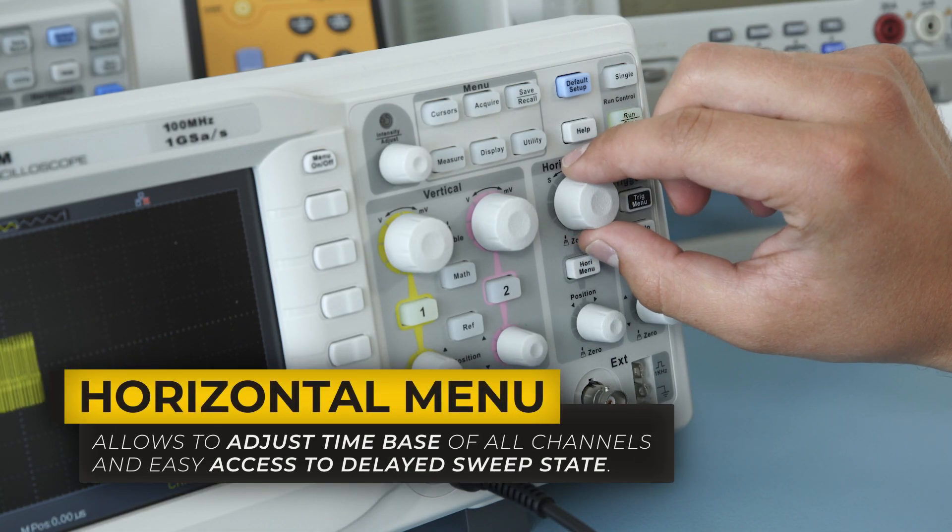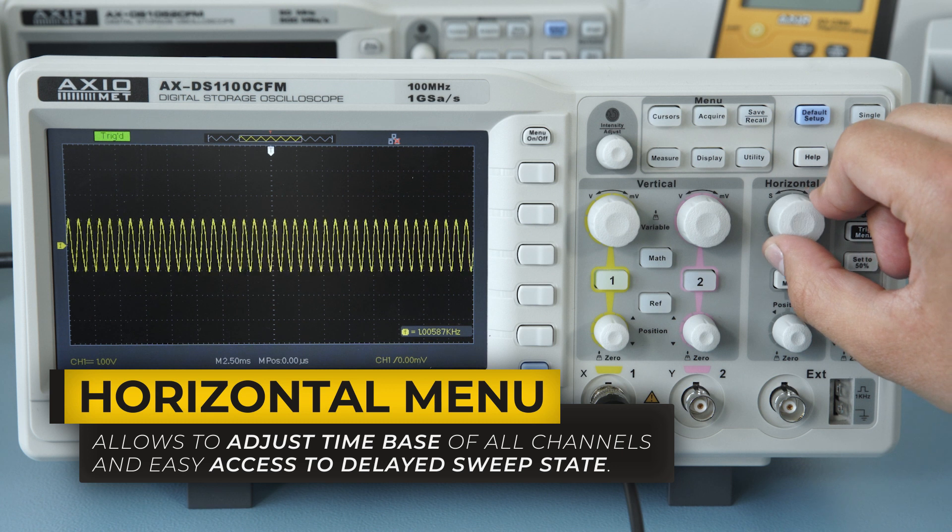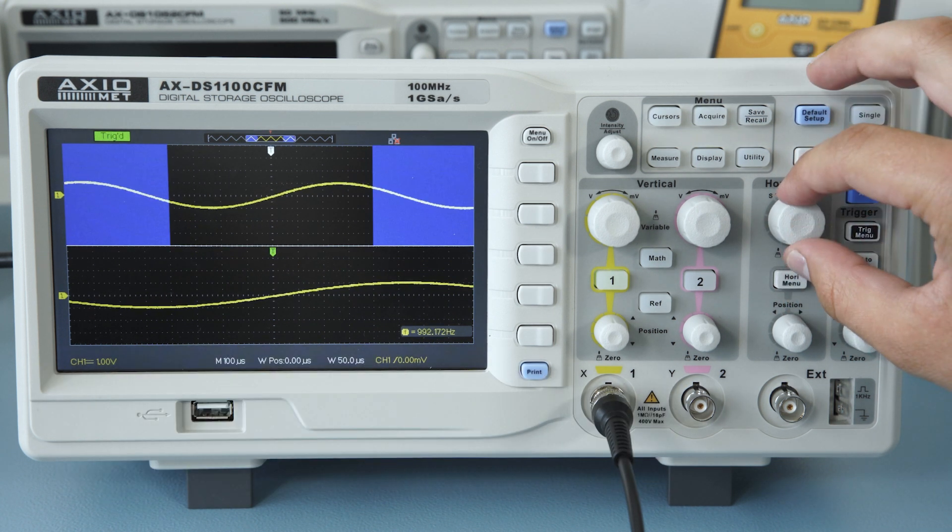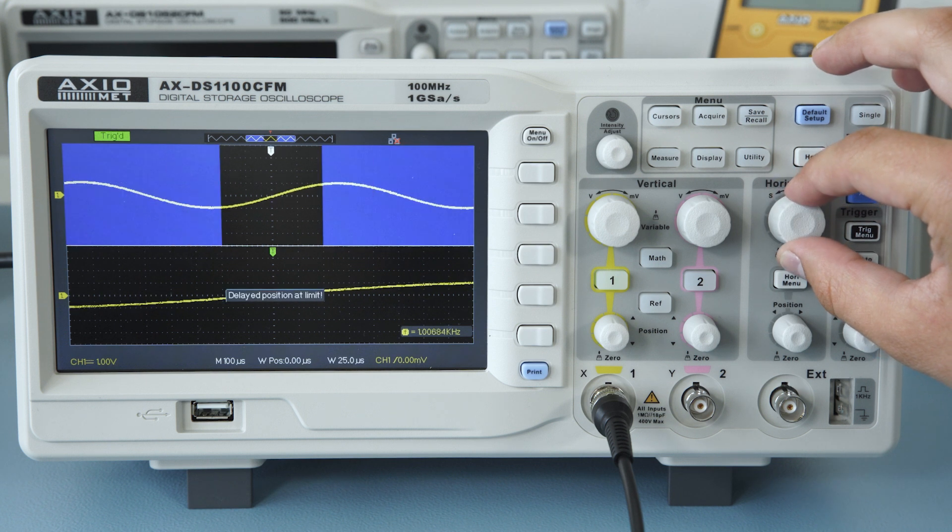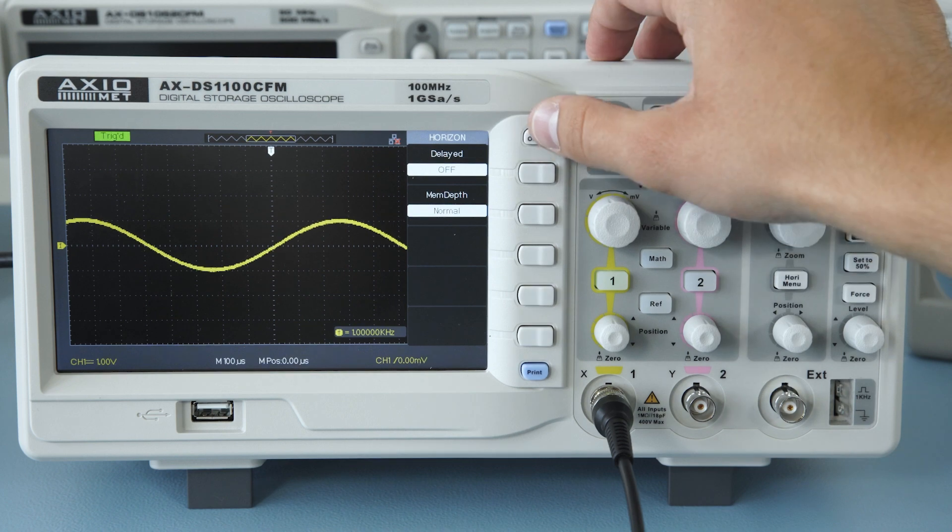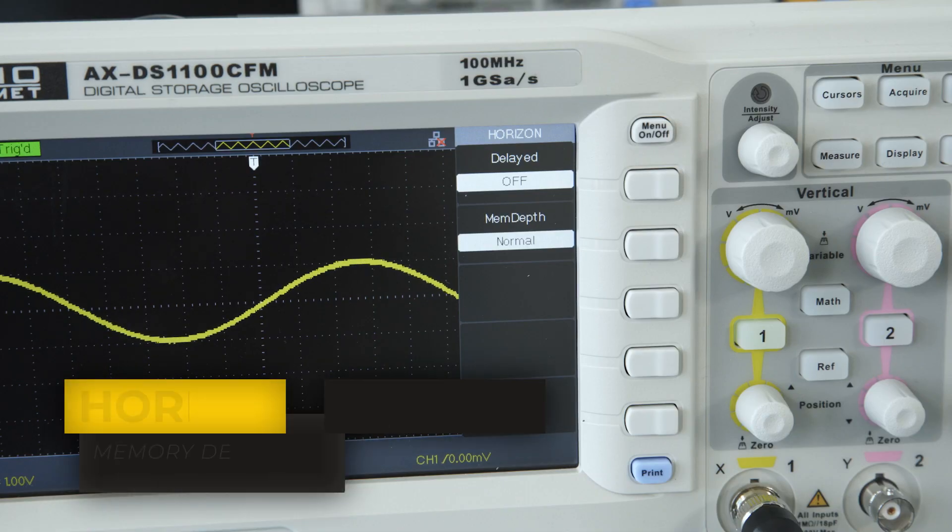The horizontal knob allows you to adjust the horizontal timebase of all channels and easy access to delay sweep state. You can also access the delay sweep function by pressing the menu button.